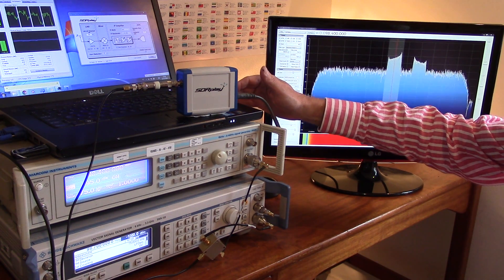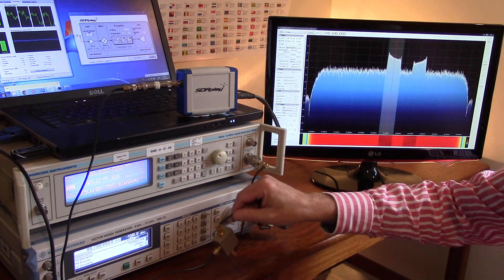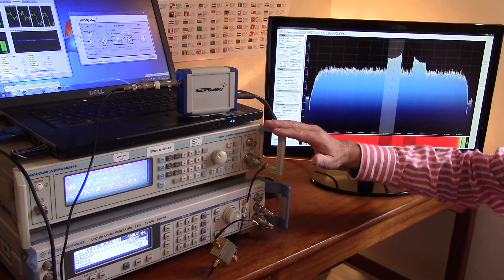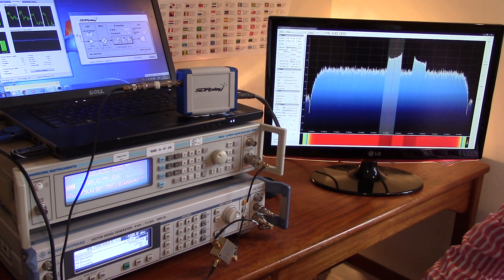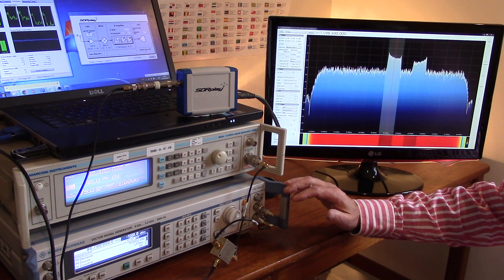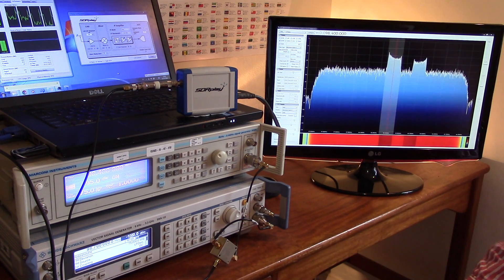At the antenna input we've actually got a combiner coming from two signal generators. The top one is going to be our wanted signal at 98.4 megahertz and the lower one is our unwanted blocking signal at 98.7 megahertz.